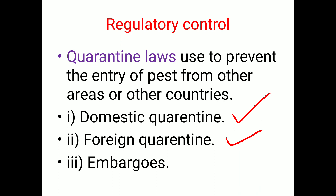The next type is foreign quarantine — a complete restriction on the movement of agricultural commodities from one country to another country — for example, fire blight of apple. The last type is embargoes — a complete ban on the movement, export, and import of agricultural commodities from one country to another — for example, coffee rust in Sri Lanka, where export and import of coffee planting material is completely banned. This is called embargoes.